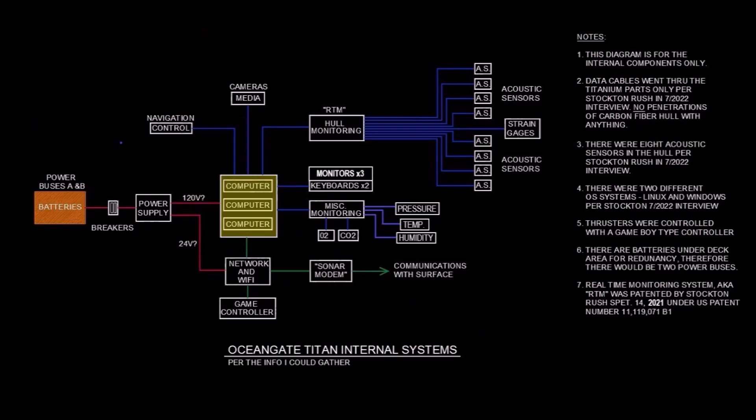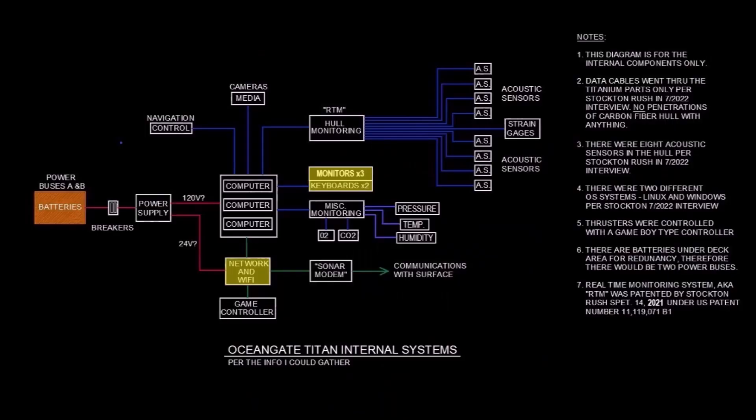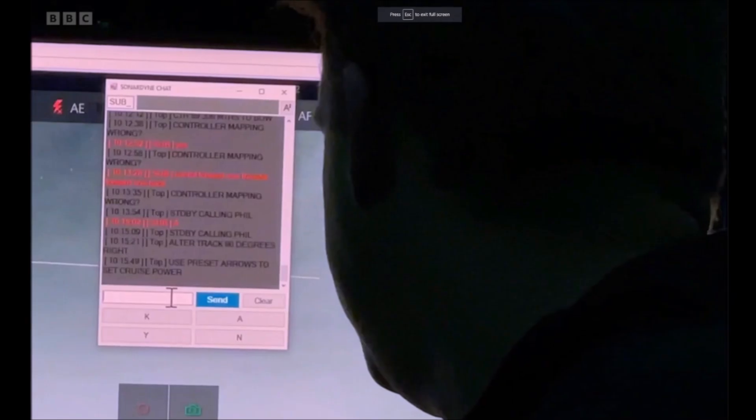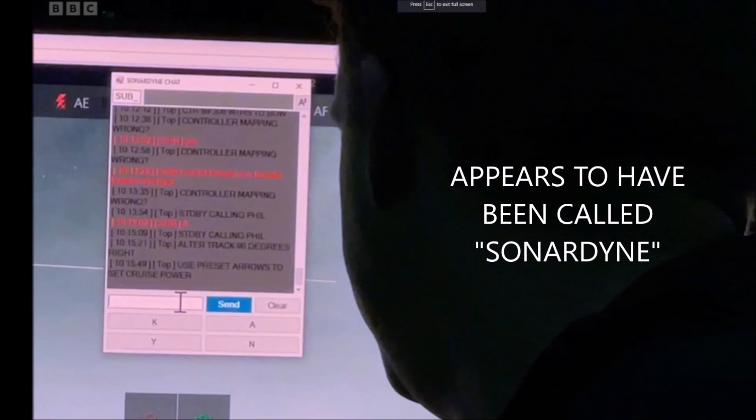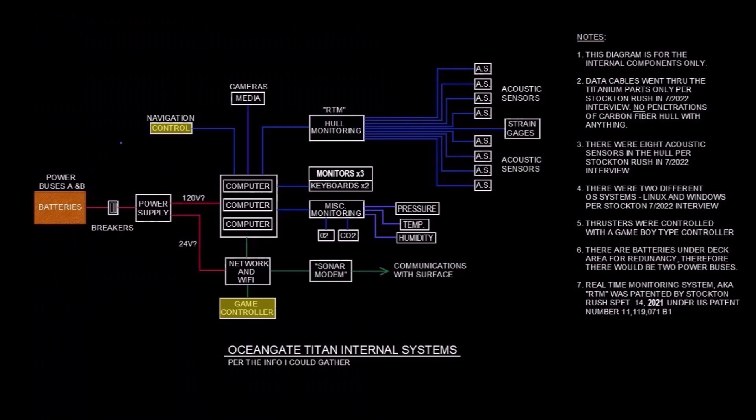At the heart of the internal systems was three computers. According to Stockton Rush, they were using both Linux and Windows operating systems. I suspect one computer was dedicated to the real-time monitoring system. There were also three monitors, two keyboards, network, and Wi-Fi. And according to Bruce Morton, there was what he called a sonar modem, which was used to communicate with the surface. Now, this was a system of texting rather than voice communication. Apparently, Stockton felt that voice communication detracted from the experience, so he didn't want it. The infamous game controller used to navigate the sub was also tied into this system somehow.